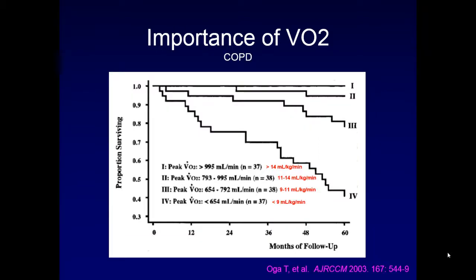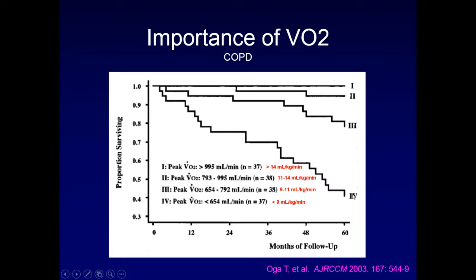This holds true in COPD as well. Taking a typical 70 kg individual: if your VO2 is greater than 14 mL/kg/min at five years in COPD, essentially all are alive. Between 11 and 14, survival is still about 95% at five years. But when you drop below 11 — between 9 and 11 in group 3, or less than 9 in group 4 — you start to see a precipitous drop in survival over time.